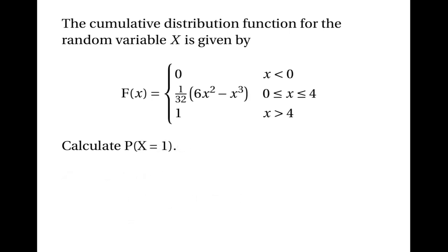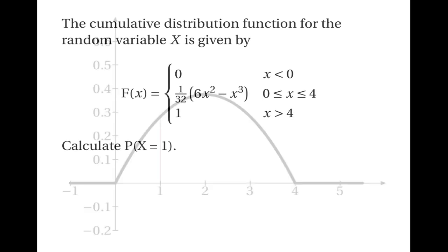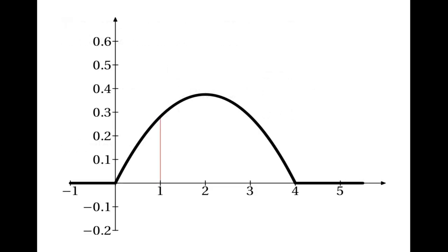Let's calculate the probability that x is equal to 1. I hope you realised this was actually a trick question. The probability that x is equal to 1 is the area of this line, and the area of a line is 0. The probability that x is equal to 1 is equal to 0.